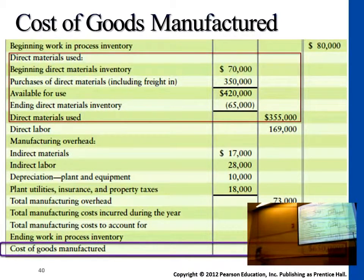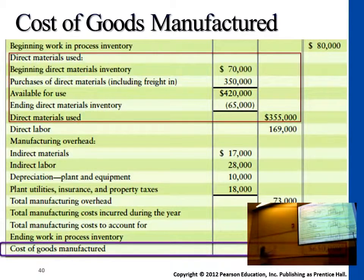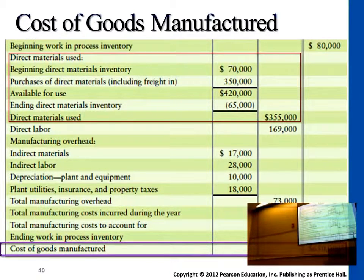Do we make new purchases? Yes, $350,000 — and that already includes freight. So the total: we add those two numbers together, just as a summary, and we have $420,000 worth of materials available to start production.